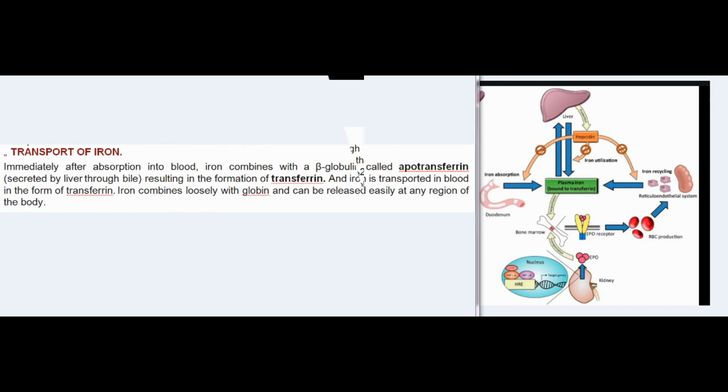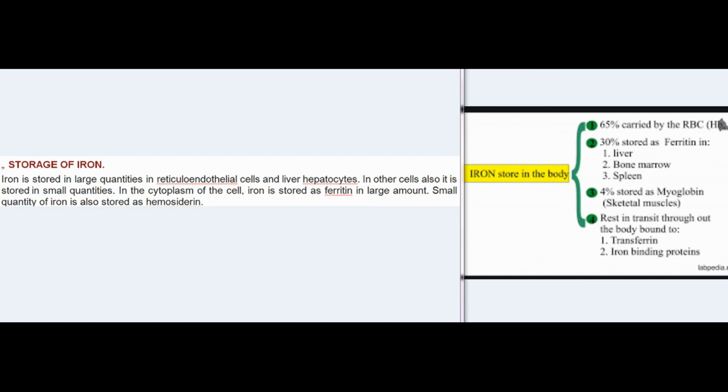Transport of iron: immediately after absorption, iron combines with a beta-globulin called apotransferrin secreted by the liver through bile, resulting in the formation of transferrin. Iron is transported in blood in the form of transferrin; it combines loosely with globin and can be released easily at any region of the body. Storage of iron: iron is stored in large quantities in reticuloendothelial cells and liver hepatocytes, and in small quantities in the cytoplasm of other cells.